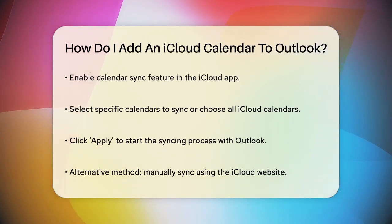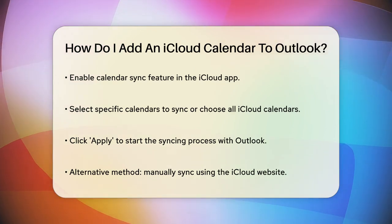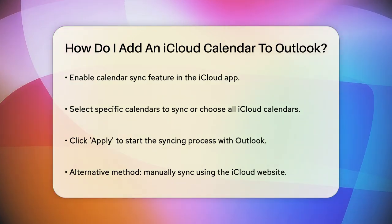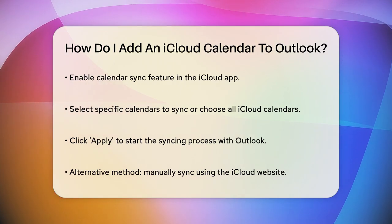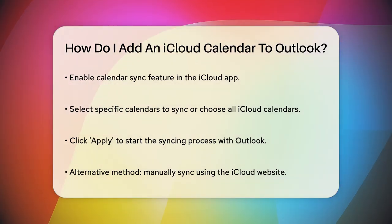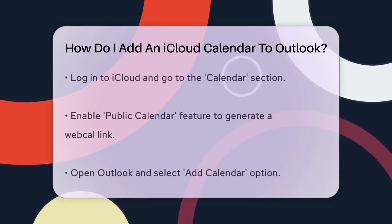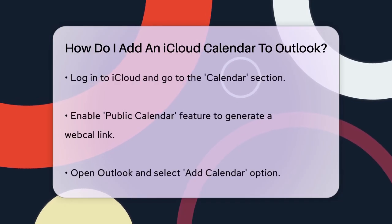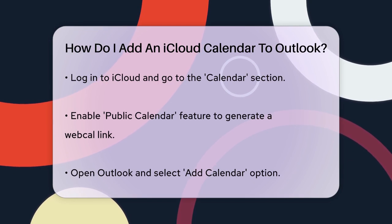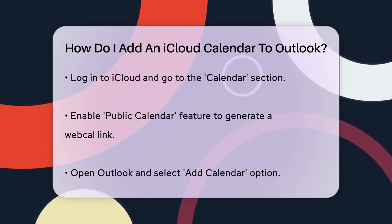But what if you prefer a web-based approach, or if the app method isn't working for you? You can manually sync your iCloud calendar with Outlook using the web. Start by visiting the iCloud website and logging into your account. Go to the Calendar section and select the calendar you want to export. You'll see a Share icon next to each calendar — click on it and enable the Public Calendar feature. This will generate a unique WebCal link that you can copy.